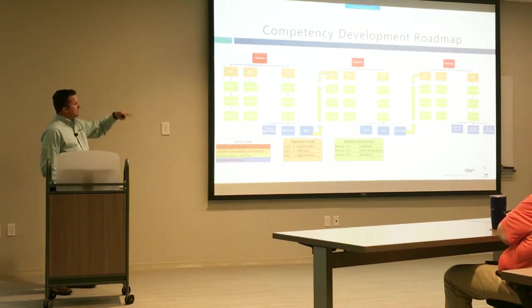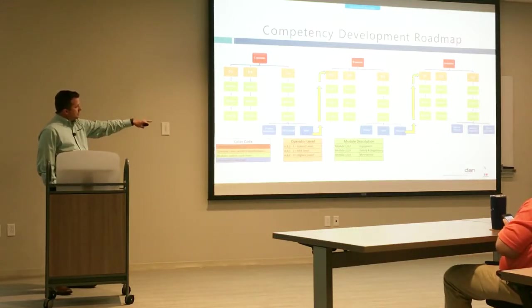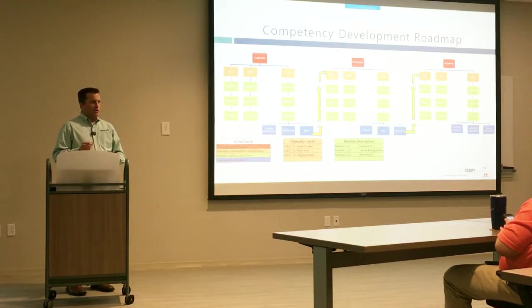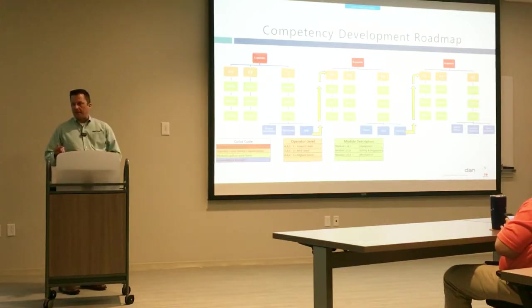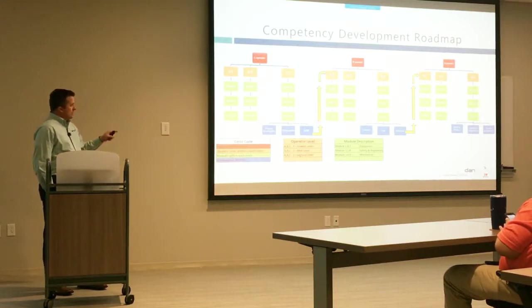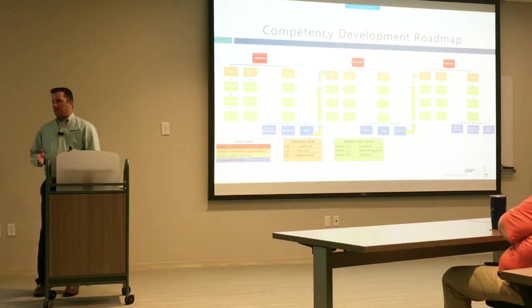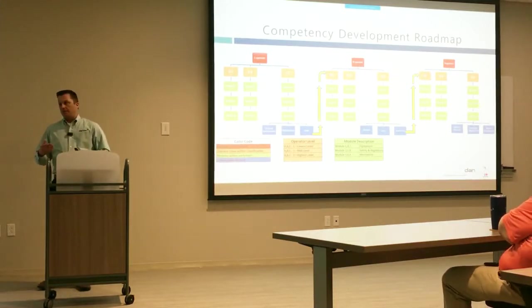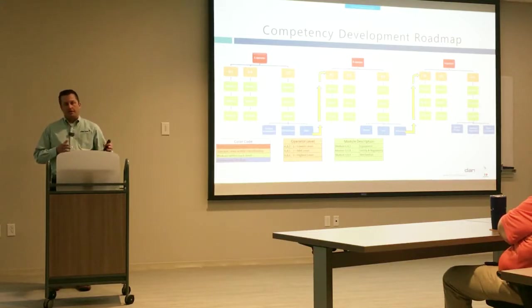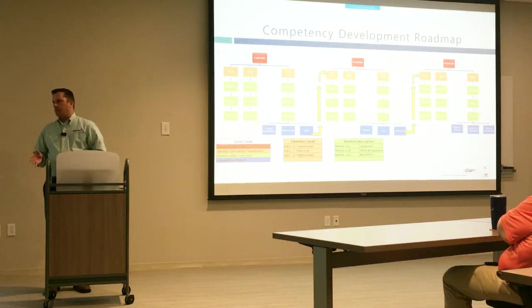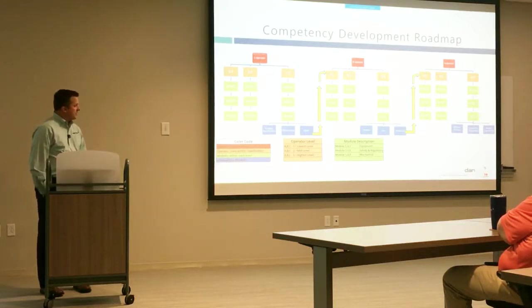He starts progressing through the different modules. The blue ones are special topics we can't break into modules — things like API RP 2D cranes or SIMs — that we have to break out separately. When a guy gets ready to move from, say, a C to a B operator, we need a process in place. We're calling them competency verification leads or field verification leads — senior-level guys in the field who can check that he can pass the test, but also physically simulate it. Maybe he can answer all the right questions about rolling out an orifice plate, but we want him to physically do it and prove it.